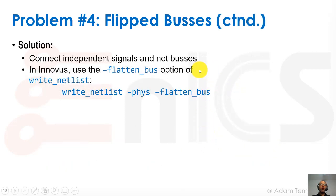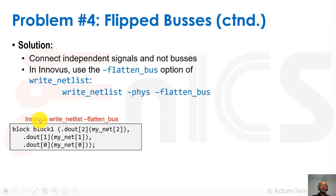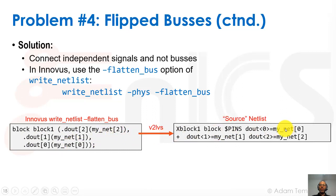The solution is pretty simple. In Innovus, we have the minus flatten_bus option of the write_netlist command. If we use write_netlist with minus flatten_bus, it will explicitly write out each of these signals. So we get our Verilog netlist not in vector format — it has dout2 as one connection and connects it to Minet2, dout1 to Minet1, dout0 to Minet0. When this goes through V2LVS, dout0 is connected to Minet0, dout1 to Minet1, dout2 to Minet2, and that solves the problem. It does cause V2LVS to complain a little, but you have to disregard those warnings.